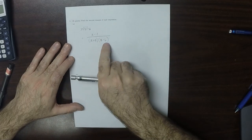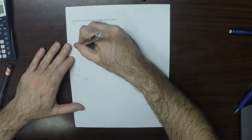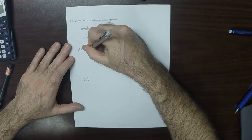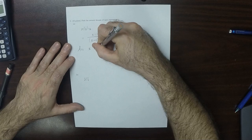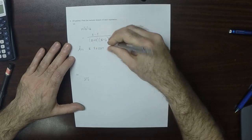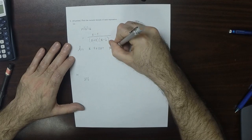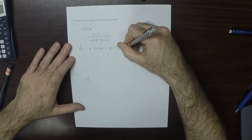So the only two numbers which can cause a problem are negative 8 and positive 6. So the natural domain is all x, except x is negative 8 and x is 6.